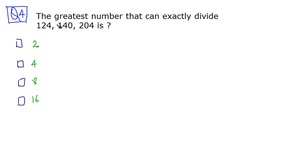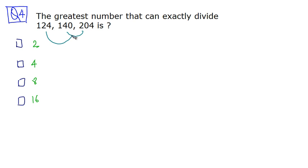Question number 4: the greatest number that can exactly divide these three numbers. HCF is also known as GCD, the greatest common divisor. So this question is asking us to calculate the HCF of the three numbers. We'll first find the HCF of the first two numbers, and then find the HCF of that result with 124.